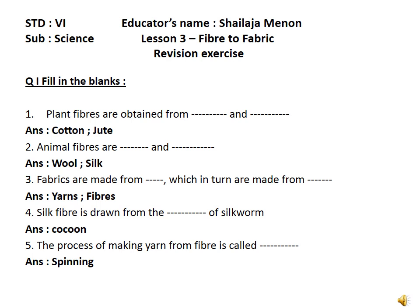Fourth number: silk fiber is drawn from the dash of silkworms. What will be the answer? It is cocoon. Next number: the process of making yarn from fiber is called dash. The answer is spinning.